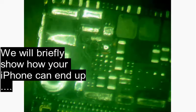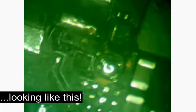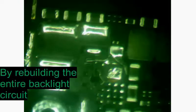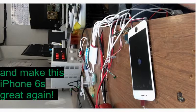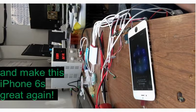Let's fix an iPhone 6S with extreme backlight damage. We'll briefly show you how your iPhone can end up looking like this and how we're going to repair it by rebuilding the entire backlight circuit and making this iPhone 6S great again. Let's get started.